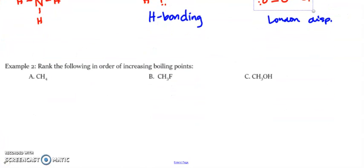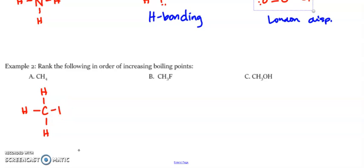Now rank the following in order of increasing boiling points — lowest to highest. We need to figure out the intermolecular force for each and relate that to boiling point. Drawing CH4: carbon bonds to four hydrogens, giving a tetrahedral shape. All the hydrogens are equally spaced and the same, so this is nonpolar, which means London dispersion.